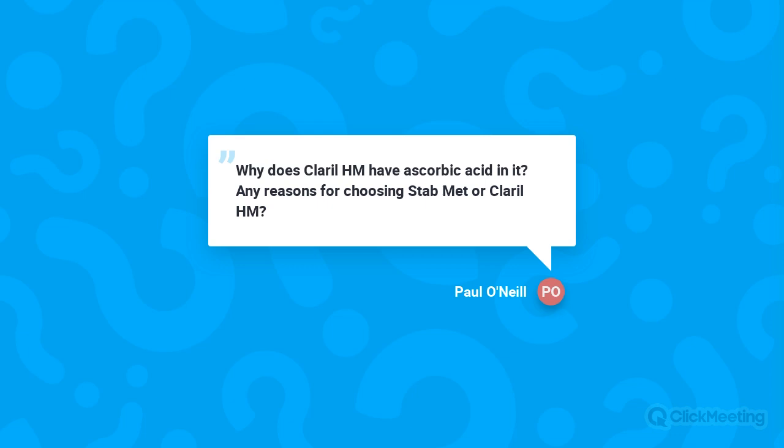Paul O'Neill asks why Clarol HM contains ascorbic acid, and how to choose between StableMet and Clarol HM. The ascorbic acid in Clarol HM is part of the manufacturing process for that fraction — it's a small amount, not a significant addition to the wine. Between the two, I prefer Clarol HM because it's less expensive and works as well or better than StableMet in most wines. Both work fine, so either would be appropriate.